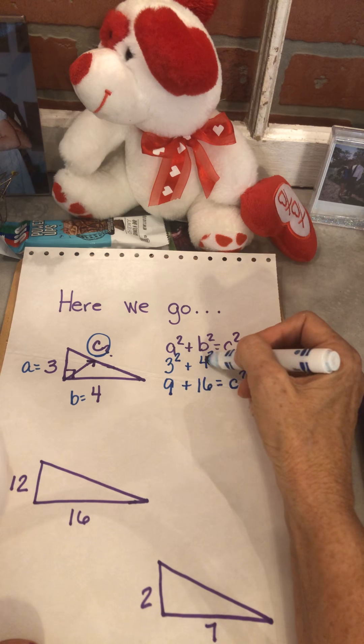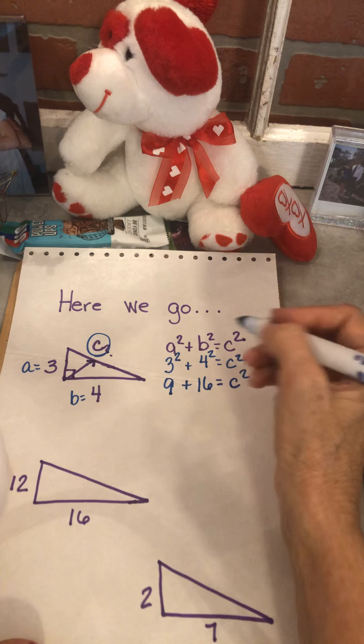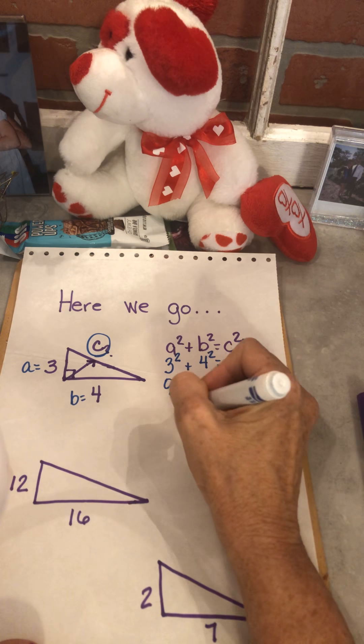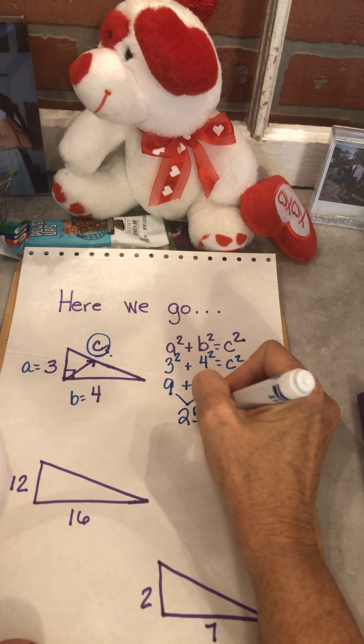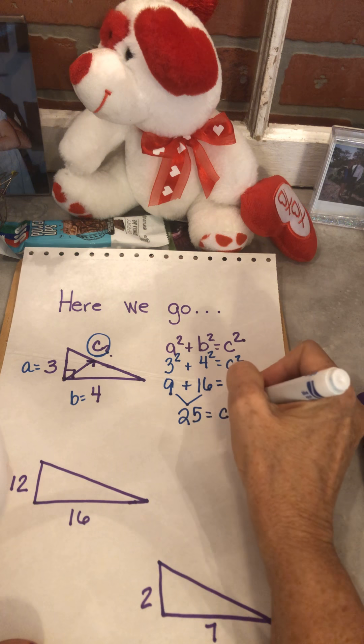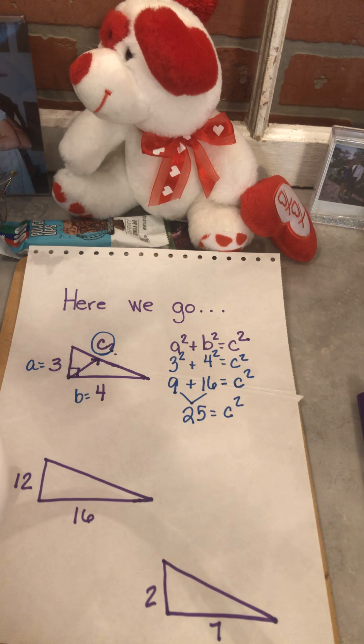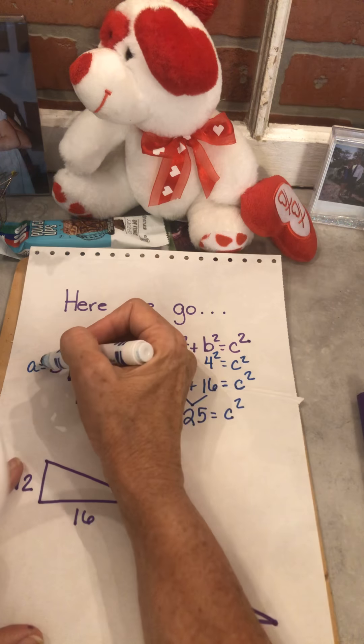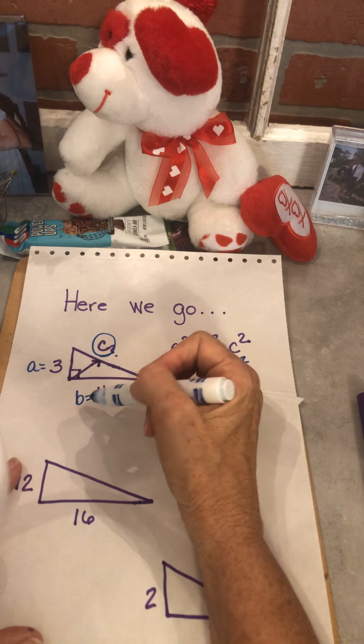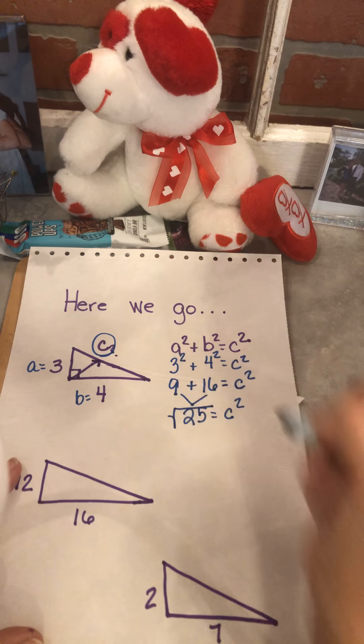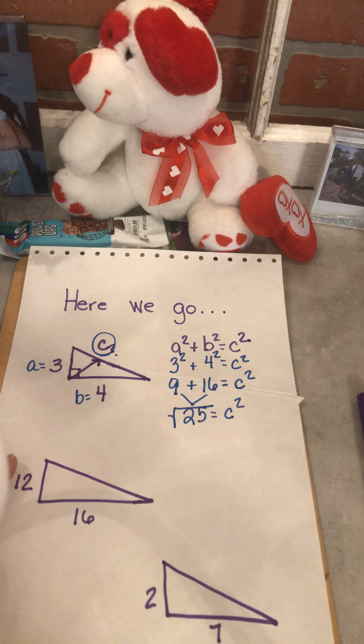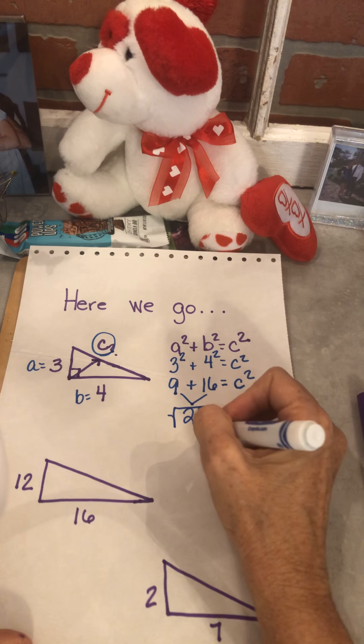Well, 3 squared is 9 and 4 squared is 16, and they equal c squared. So all I've done is say 3 times 3 is 9, 4 times 4 is 16. Now I add those up, and 9 plus 16 is 25. So that's what I have. But wait a minute, I knew the 3 before I squared it, I knew the 4 before I squared it, so I want to find the square root.